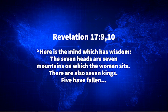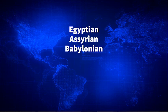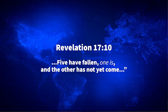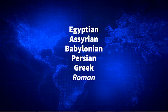So the seven heads are seven kingdoms on which the woman, the harlot, sits. There are also seven kings: five have fallen. The kingdoms that had fallen at the time John received this vision were the Egyptian, the Assyrian, the Babylonian (pictured by the lion), the Medo-Persian (pictured by the bear), and the Greek (pictured by the leopard). And then it says 'one is' — one was extant and thriving at the time, which would have been the Roman Empire that John was living under.